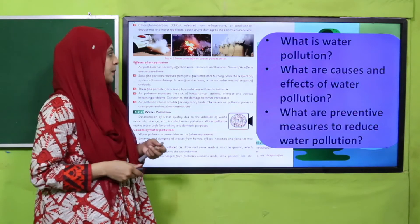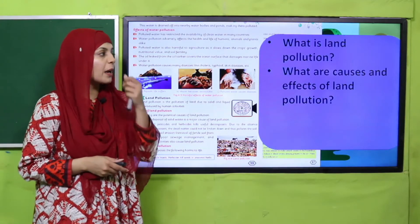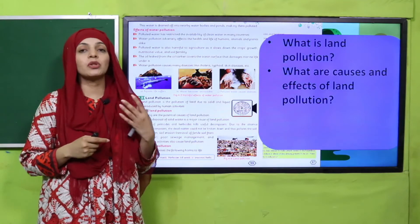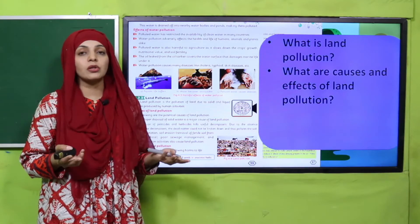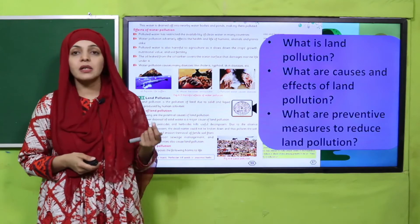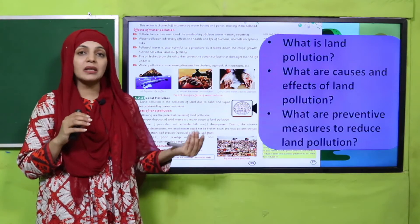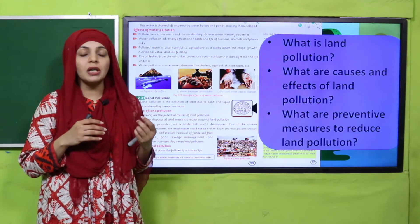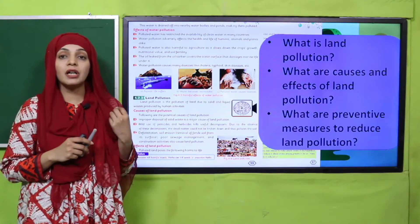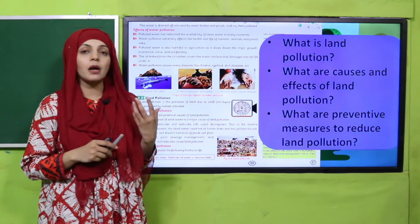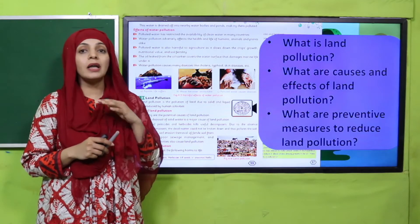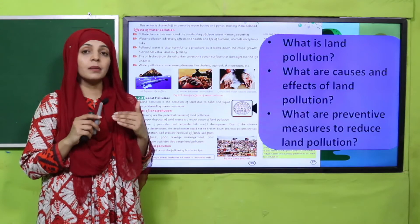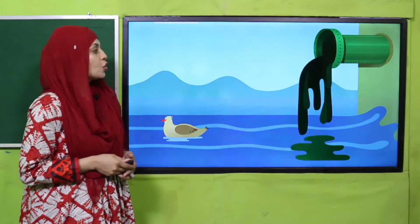Then we discussed land pollution. Addition of anything that has a bad effect on the land is called land pollution. Its causes include dumping various types of waste anywhere on the ground. Its effects include breeding of harmful insects which spread various diseases, and it also causes infertility of the land. Preventive measures include planting more trees, proper disposal of waste, and less use of pesticides and herbicides — all of which can help lessen the amount of land pollution.